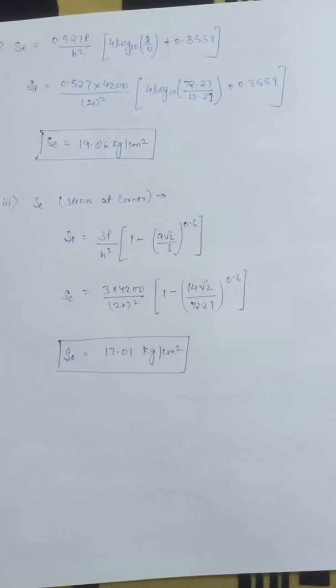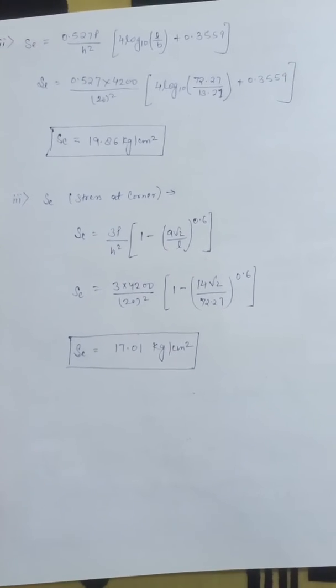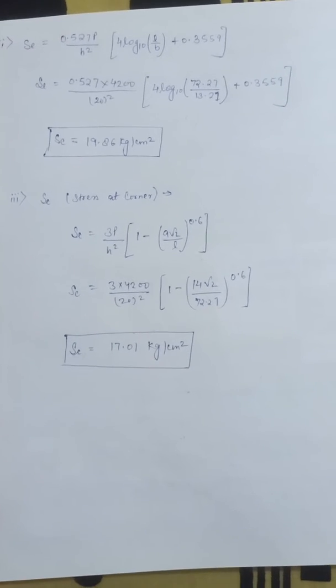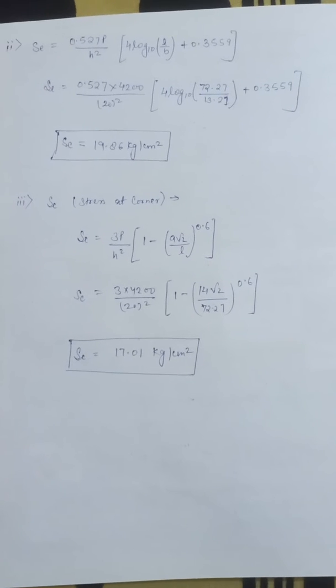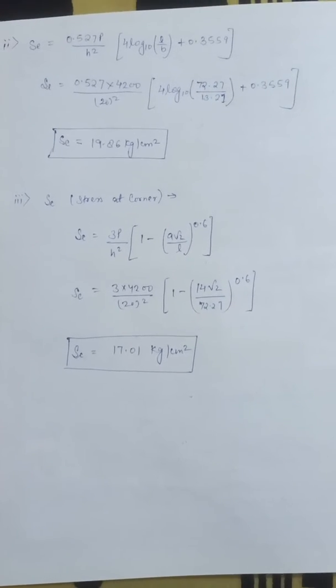The formula is 3P/h² [1 - (a√2/L)^0.6]. We put all the values. It's 17.01 kg per cm².